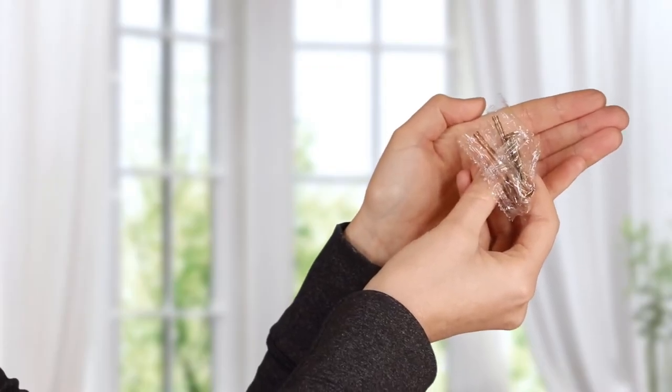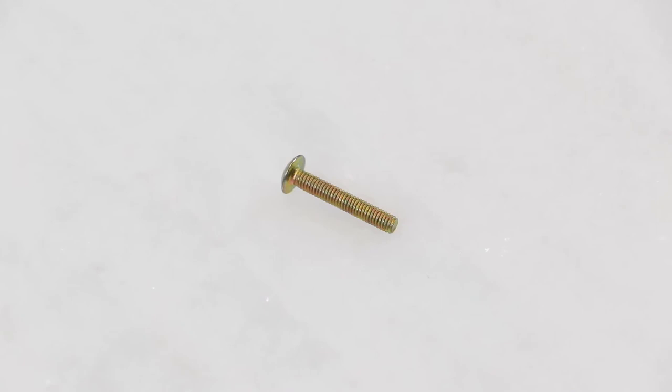Now you're ready to attach your new pulls. Screws are included with your pulls. In each pull pack there are two types of screws. The standard screw is the perfect length for cabinet doors. It may also work for your drawers if you don't have thick drawer fronts.